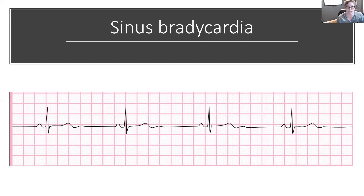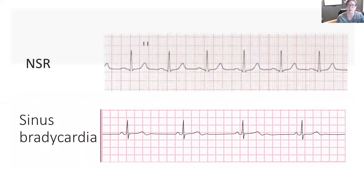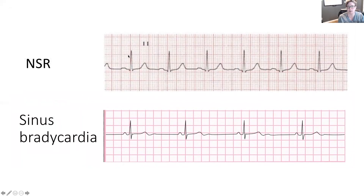Let's take a look at what a sinus bradycardic rhythm strip looks like. We can still see our P wave, QRS complex, and T wave, but there's a longer gap in between each complex. That is really the signature mark of sinus bradycardia — the ECG waveforms and intervals will be normal with the exception of rate. Comparing with normal sinus rhythm on top, we've got six R waves — a rate of 60 beats per minute. On the bottom, I only have four, so that's 40 beats per minute. Sinus bradycardia is defined as less than 60 beats per minute.